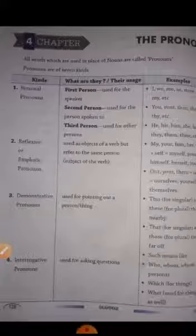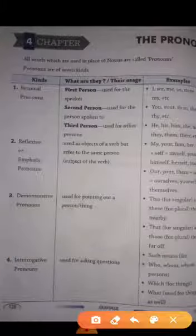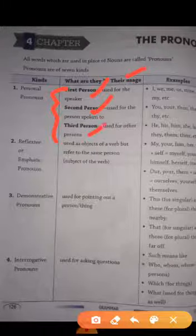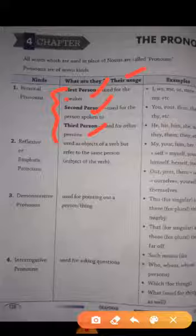So first kind is personal pronouns. Personal pronouns what are they, kya hote hain or kaise use hote hain. Personal pronouns mein three persons hote hain. First person, second person and third person. First person wo hote hain jho baat kar rahe hain, jho keh rahe hain. Second person wo hote hain jis se baat ho rahe hain, jis ko ka hii ja rahe hain.